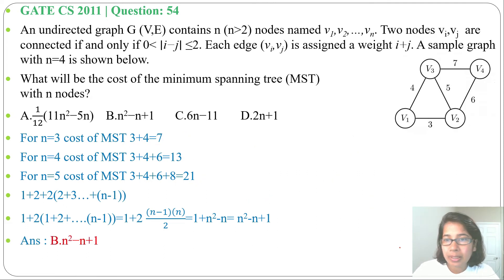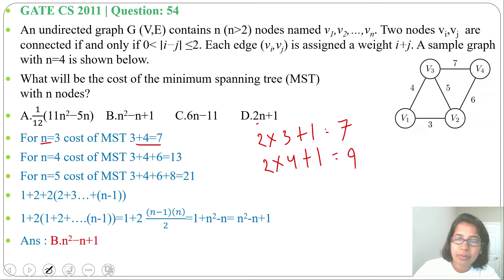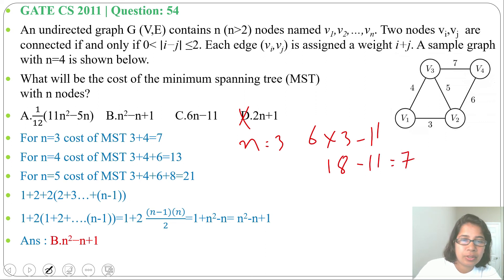You can also solve in another way but that is more time consuming - you can go one by one through options. Like here when n=3, cost of MST is 7. We can check here 2×3+1=7. So for n=3 it is working. For n=4, 2×4+1=9. So for n=4 it is not working. Option D is wrong. Next check option C. For n=3: 6×3-11=18-11=7. So it satisfied.